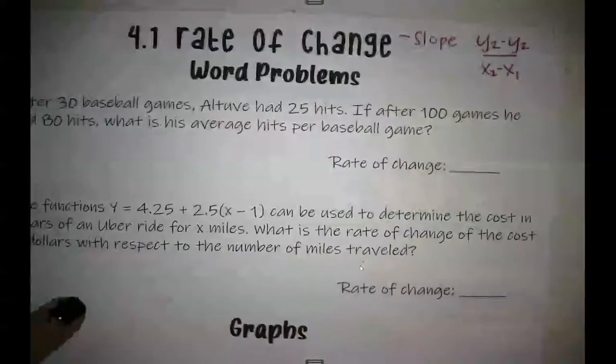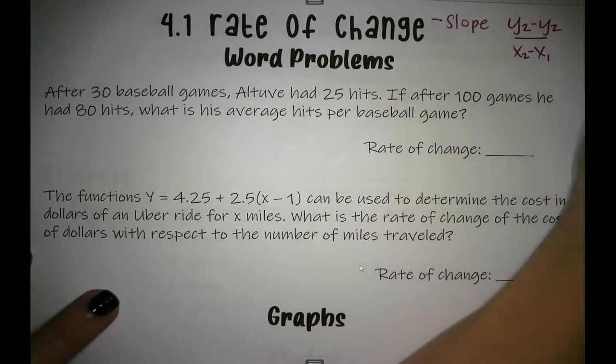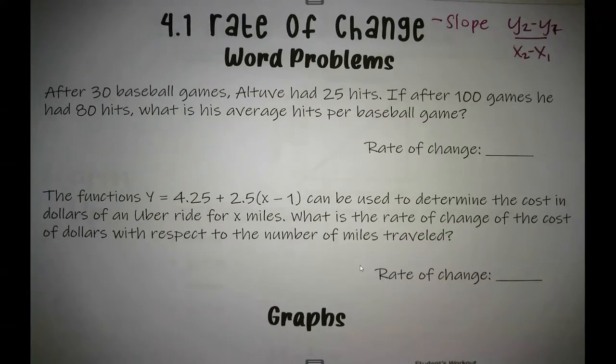You'll always be given that formula, you don't have to memorize it. And I didn't either. All right, after 30 baseball games, Altuve had 25 hits. If after 100 games, he had 80 hits, what is his average hits per baseball game?